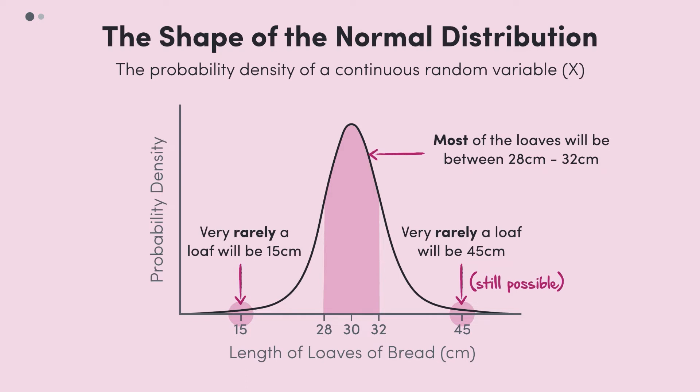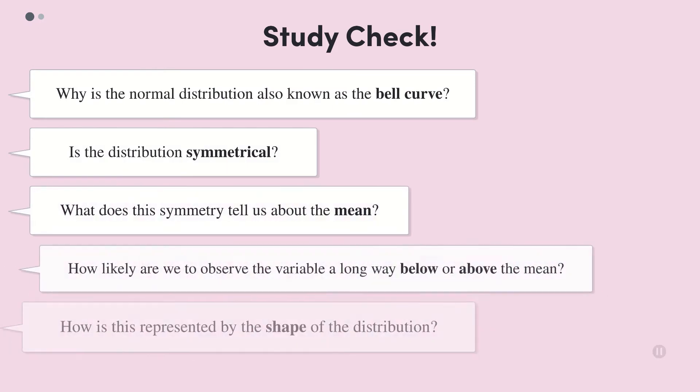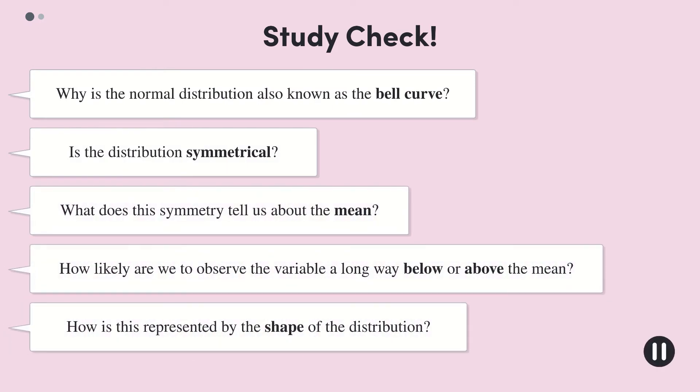That's the gist of the bell curve. We expect to get values close to the mean, and as we get further away from the mean, the probability of observing values approaches zero. So let's check that we've grasped the main content so far. Answer these quick questions for yourself. Pause here and have a go.